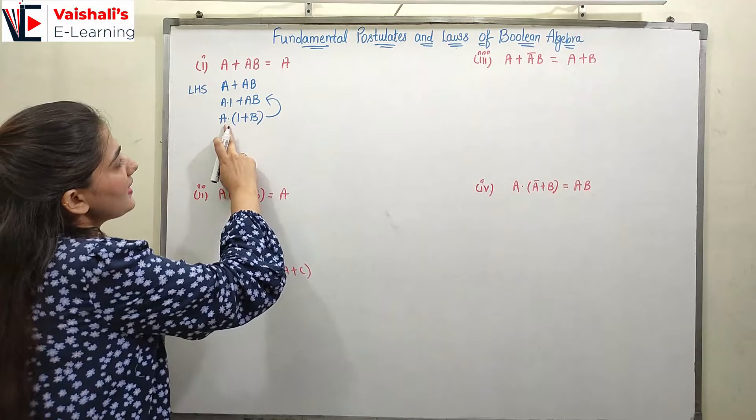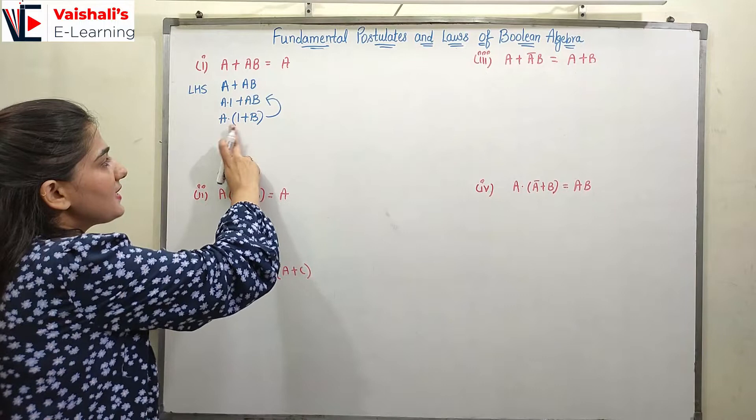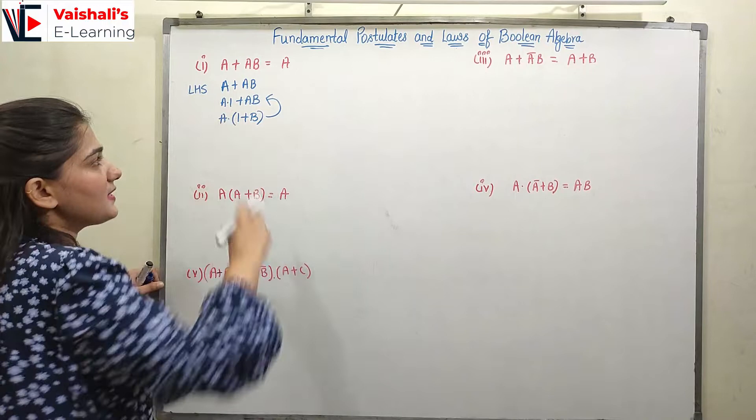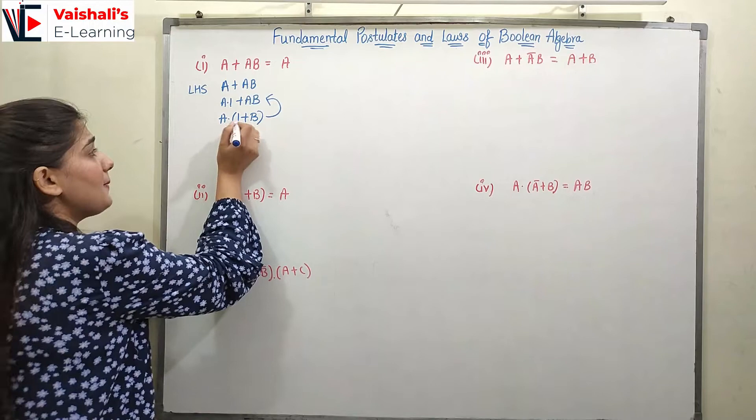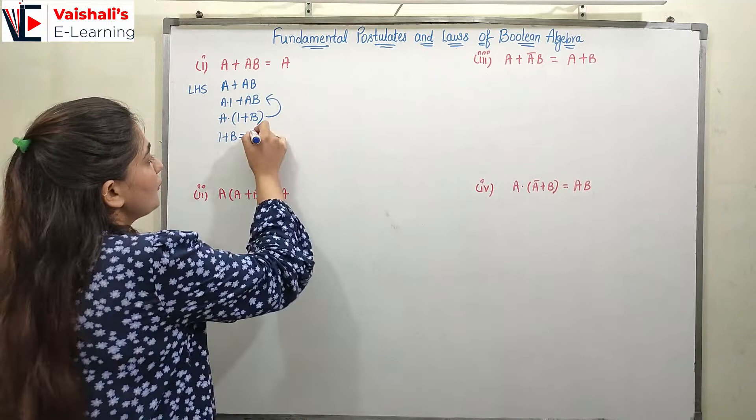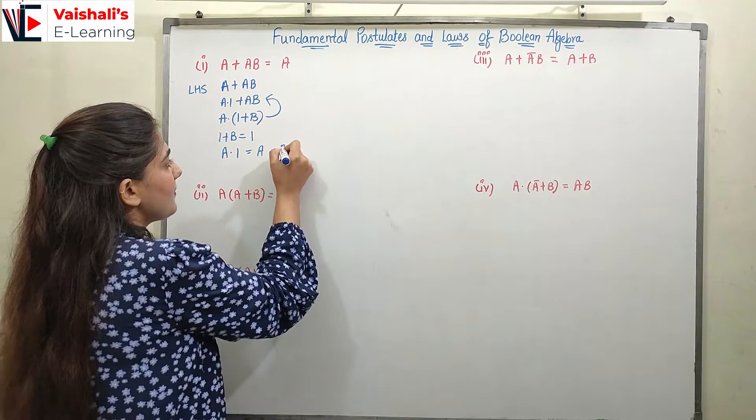So a·(1 + b) — we know that a·(1 + b) = a·1 + a·b. We have written a·(1 + b) by the reverse distributive law. Now, what is 1 + b? 1 plus any variable, whether b is 0 or 1, will always be 1. So we have a·1, which equals a. So the right hand side is equal.